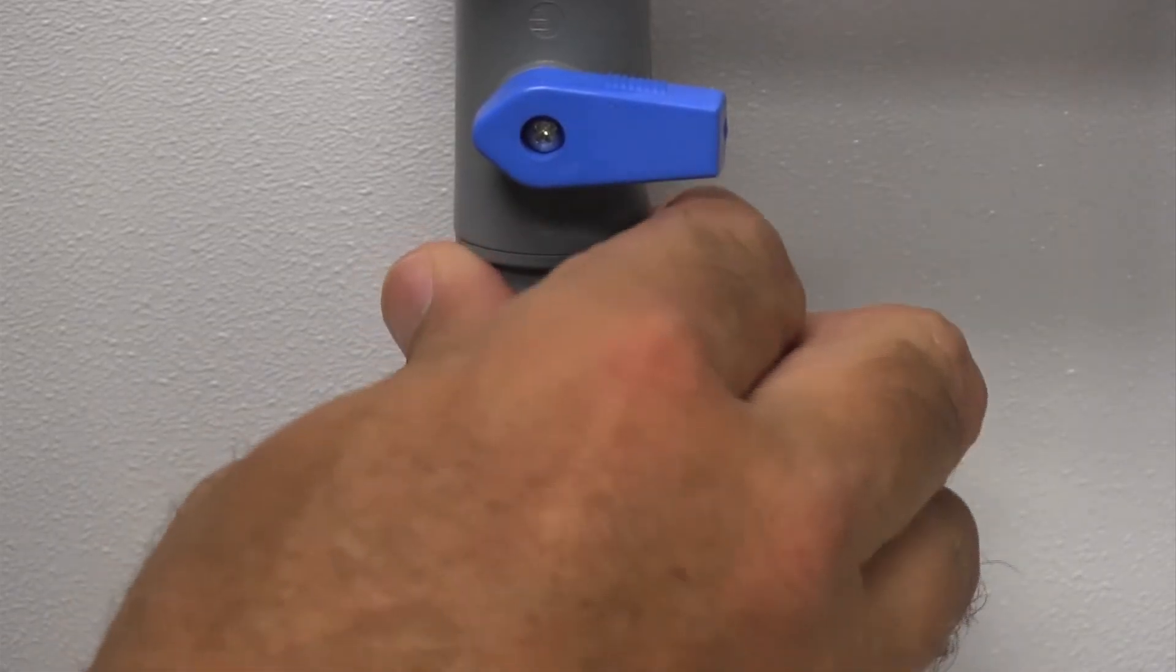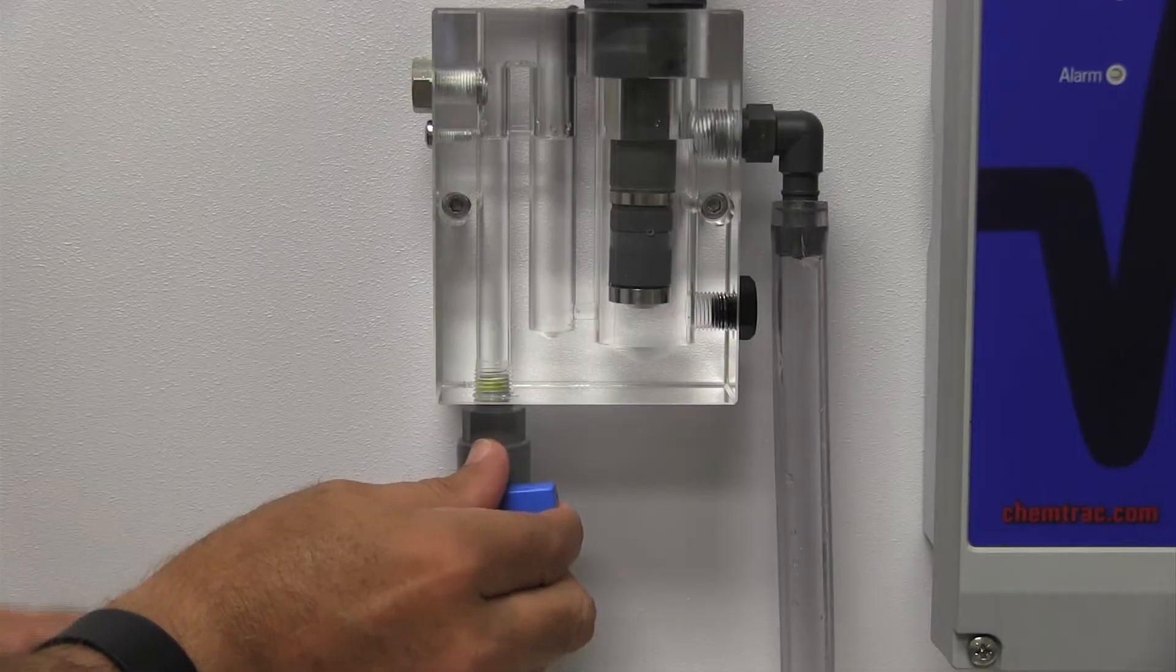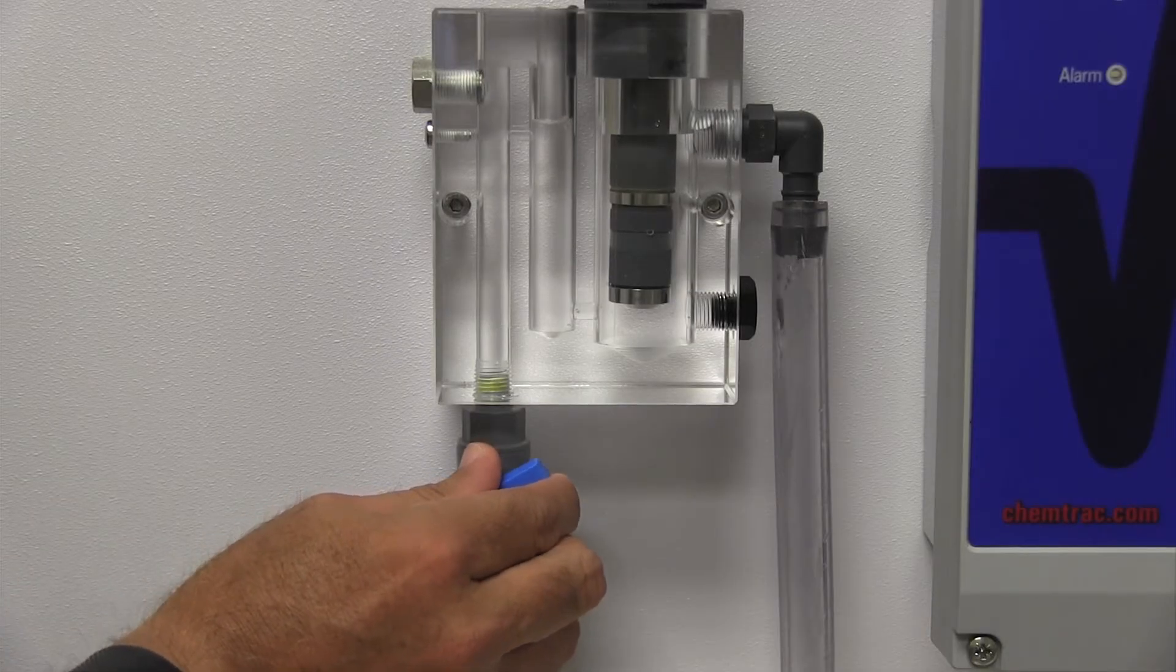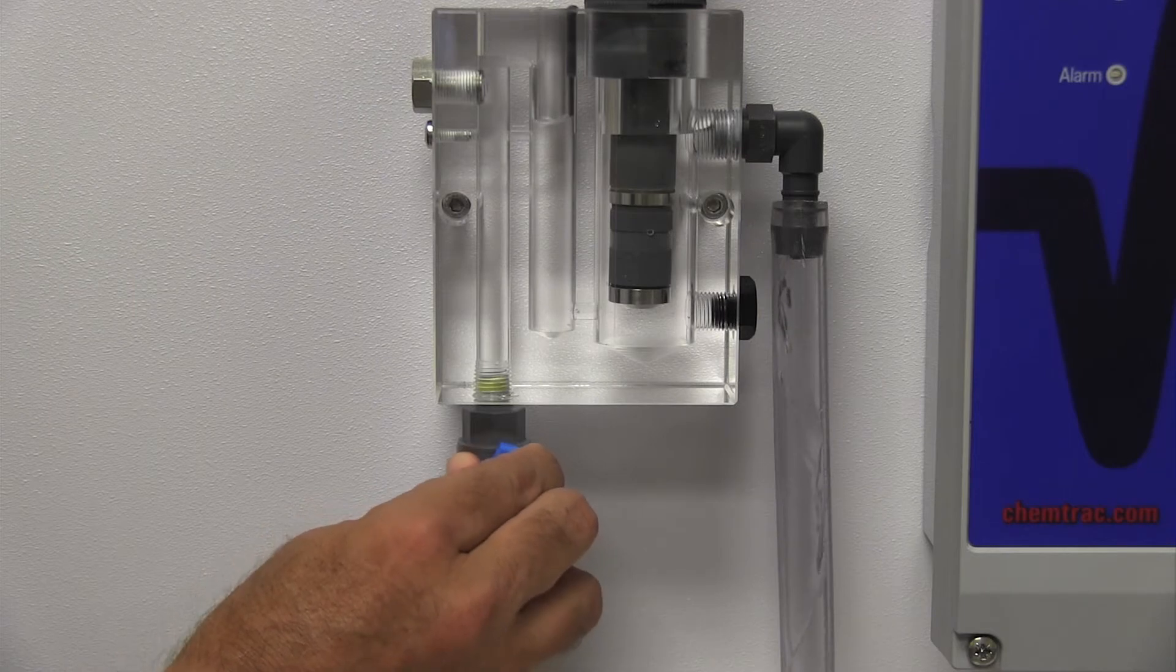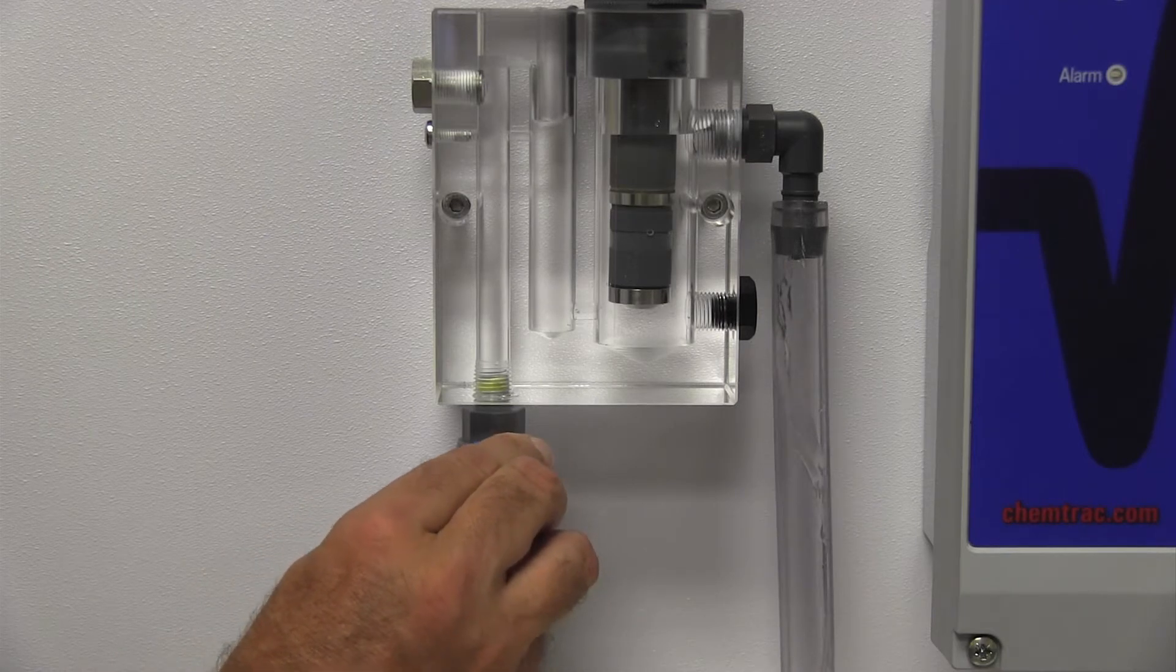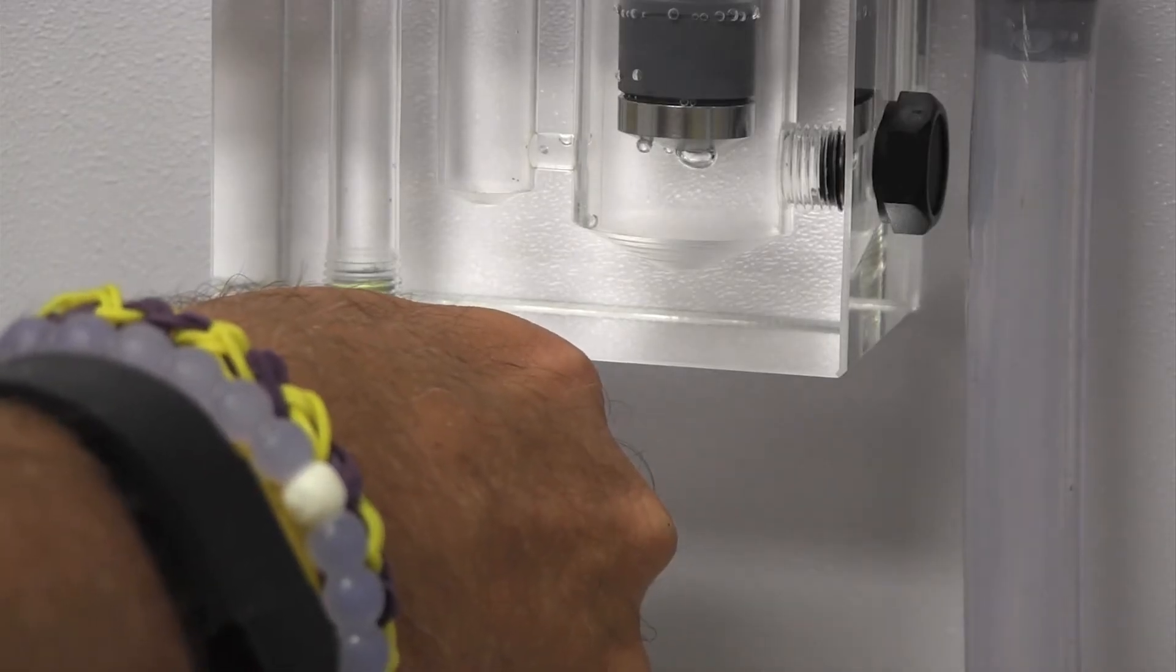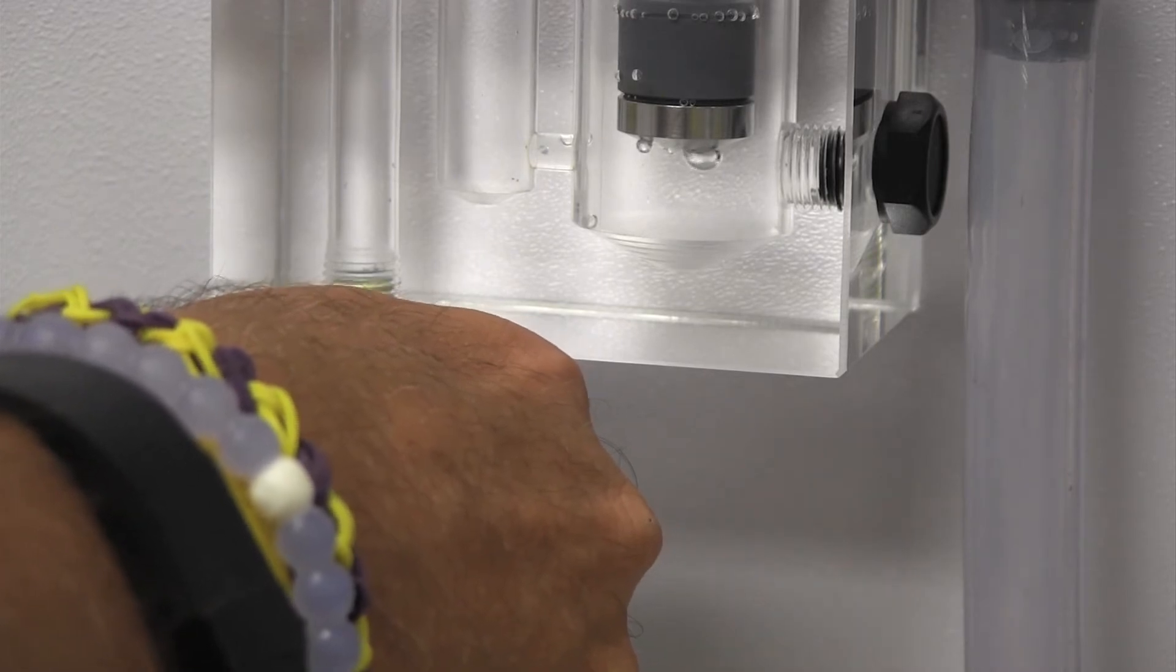Connect the sample tubing to the inlet fitting on the flow cell and start the flow of water. The recommended minimum flow rate is 500 milliliters per minute, but higher flow rates of 700 to 900 milliliters per minute may be needed to keep the membrane free of bubbles.